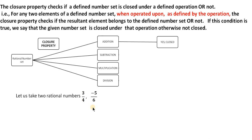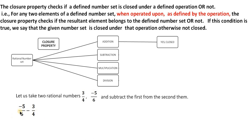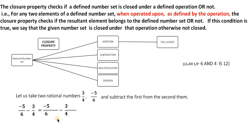Let us take any two rational numbers: 3/4 and 5/6. We are going to subtract the second from the first, which gives -5/6 - 3/4. We need the LCM of 6 and 4. The multiples of 6 are 6, 12 — and 12 is also divisible by 4, so the LCM is 12. We can also use the common division method. So both denominators need to be written in terms of 12.